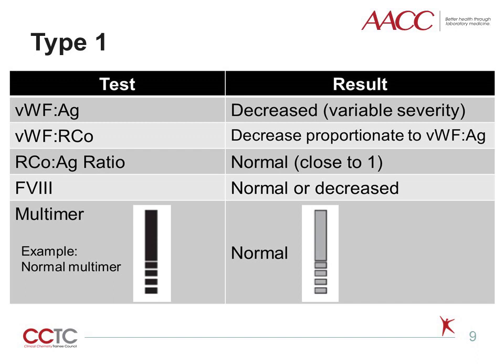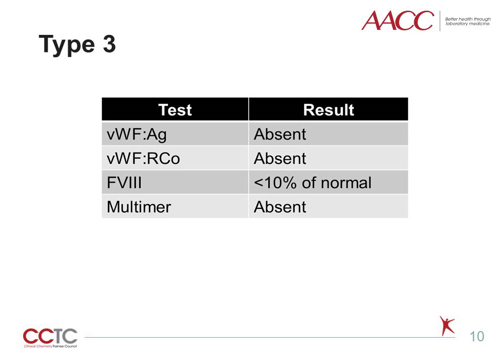Laboratories that perform von Willebrand disease testing must handle specimens with care, especially when thawing frozen plasma for testing, as von Willebrand factor can precipitate during the thawing process, inducing abnormalities that could lead to misdiagnosis. Von Willebrand factor is absent in type 3 von Willebrand disease, which accounts for less than 5% of the cases, and this results in a severe bleeding disorder. Factor VIII is also markedly decreased due to lack of von Willebrand factor as a carrier protein, resulting in a prolonged APTT in type 3 patients.